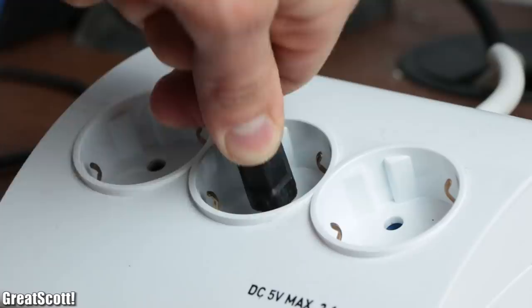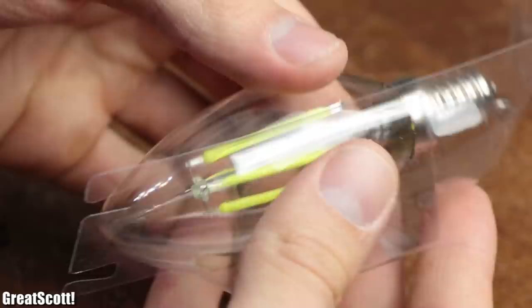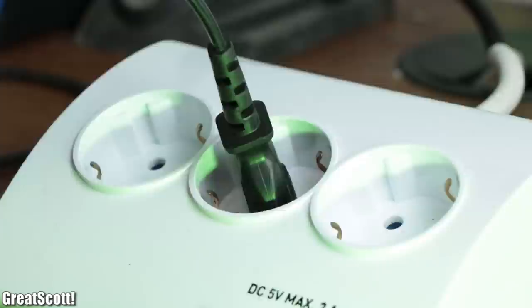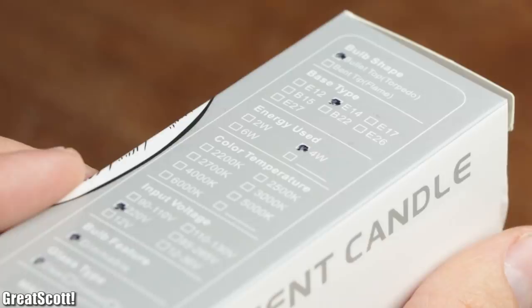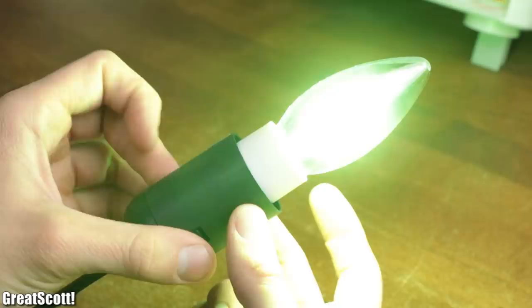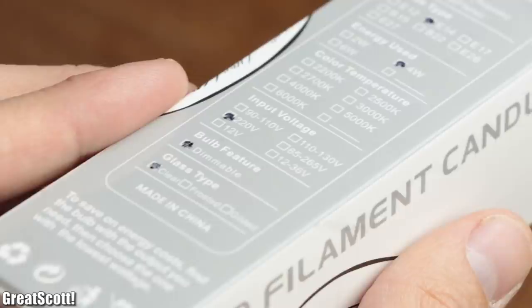A while ago a friend of mine gave me this LED light bulb which emits quite an interesting to look at green light, and he asked me whether I could create a circuit to dim its brightness. Since the packaging of the LED bulb stated that it is dimmable, I said yes that should be possible.